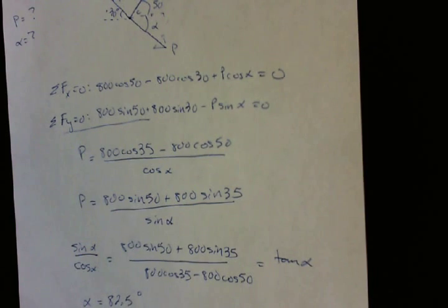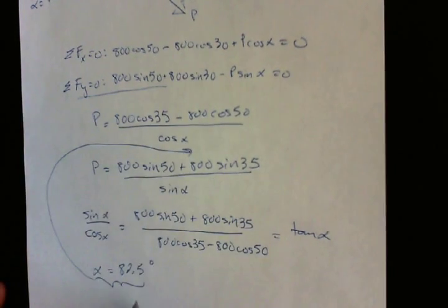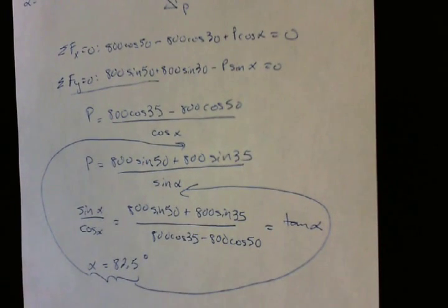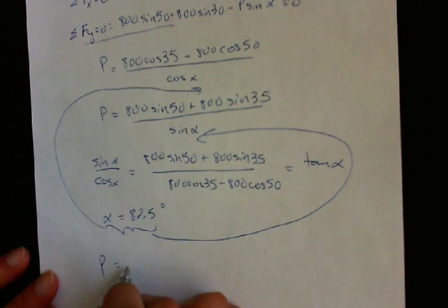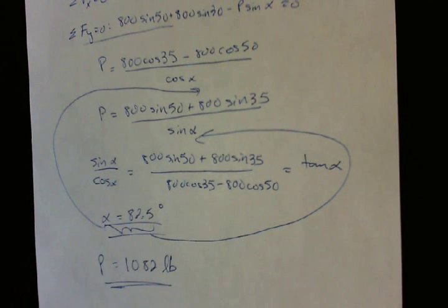Okay. So next you take this alpha, you plug it into this one or this one to get P. And if you do it correctly, you will get P equals 1,082 pounds. Okay. So thank you for watching.